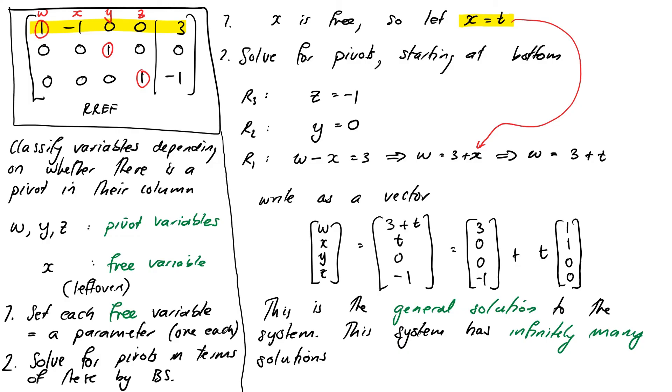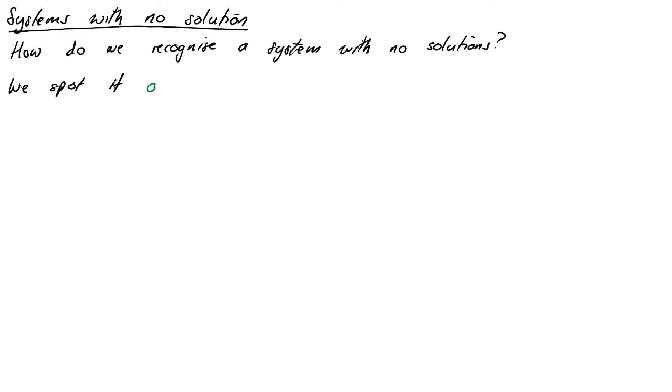Okay, so now we've seen examples that have a single solution. And we've seen an example that has infinitely many. What about an example, or how are we going to, what's going to happen if we have a system that has no solutions? How are we going to recognize that in our algorithm? Well, it turns out this one will spot after the Gaussian elimination phase to row echelon form.